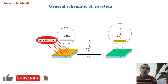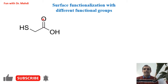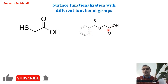Again, we can change the R — R can be different functional groups. For example, R can be thiol. After the reaction between the carboxylic acid group and the amine on the surface, we will have thiol on the surface — a thiol-terminated surface. Sometimes, if we need to have benzene on the surface, after doing this EDC coupling reaction, we will have benzene on the surface.